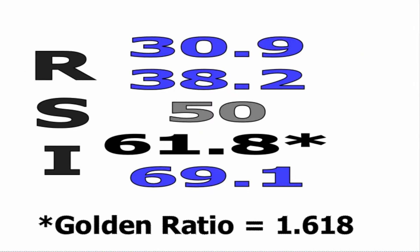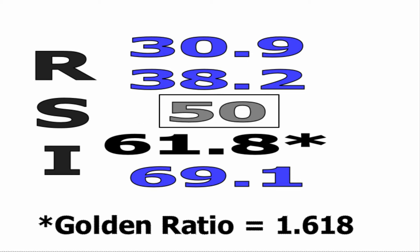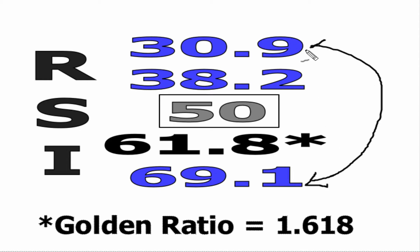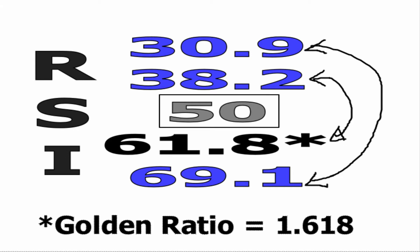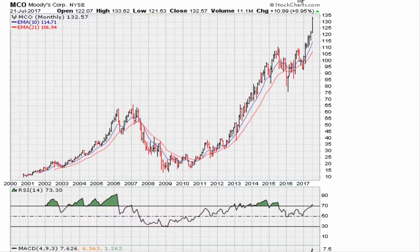Other than 50, which is the average between either pair of these numbers — the average of 30.9 and 69.1 is 50, and the average of 38.2 and 61.8 is also 50 — so 50 plays a part in understanding how stocks respond to certain levels. Let's take a look at one chart example, all data monthly, for Moody's.